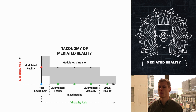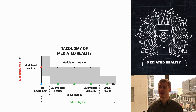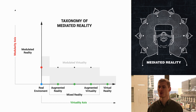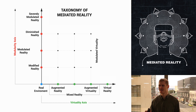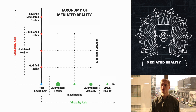So one could argue that when a virtual reality headset is turned off, the user is experiencing a state of non-computer-mediated, severely modulated reality, whereas when the headset is turned on, the user experiences a state of virtual reality. We can expand our modularity axis to include modified and diminished reality. Here we can see that severely modulated reality and virtual reality cannot interact with their perpendicular counterparts. Modified reality and diminished reality are types of realities within modulated reality, in a similar way to how augmented reality and augmented virtuality are realities within mixed reality. This diagram is the taxonomy of mediated reality.